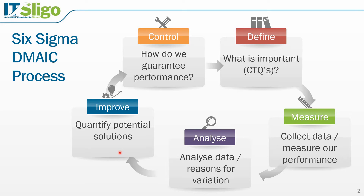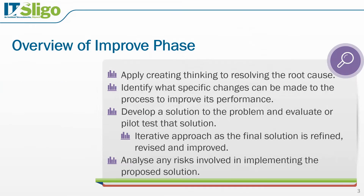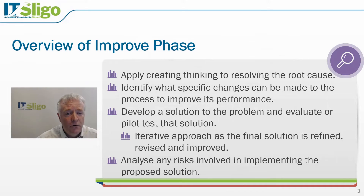The objectives of the improve phase are to develop a solution to the problem and then test that solution using confirmatory experiments. During this phase the original solution may be refined, revised and improved several times as more information becomes available from our experiments. In the improve phase we're going to apply creative thinking to resolving the root cause that we identified in the analyze phase.